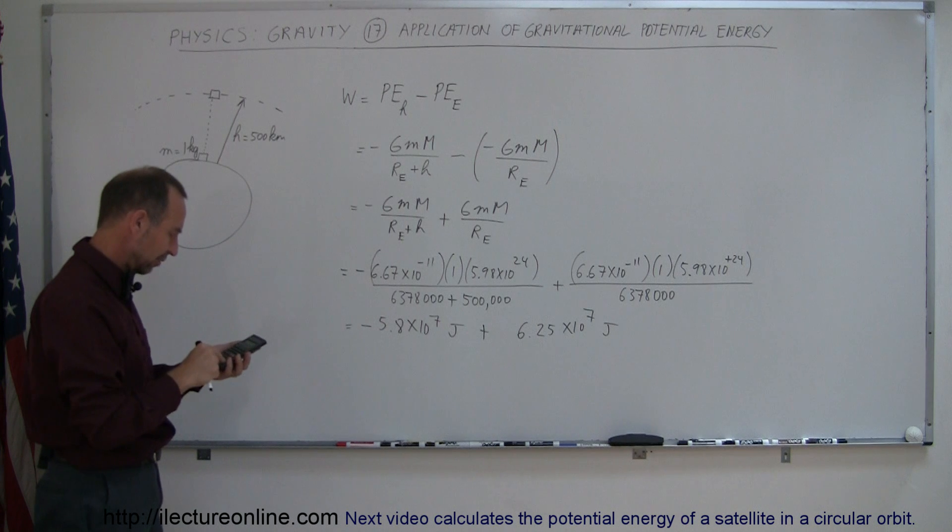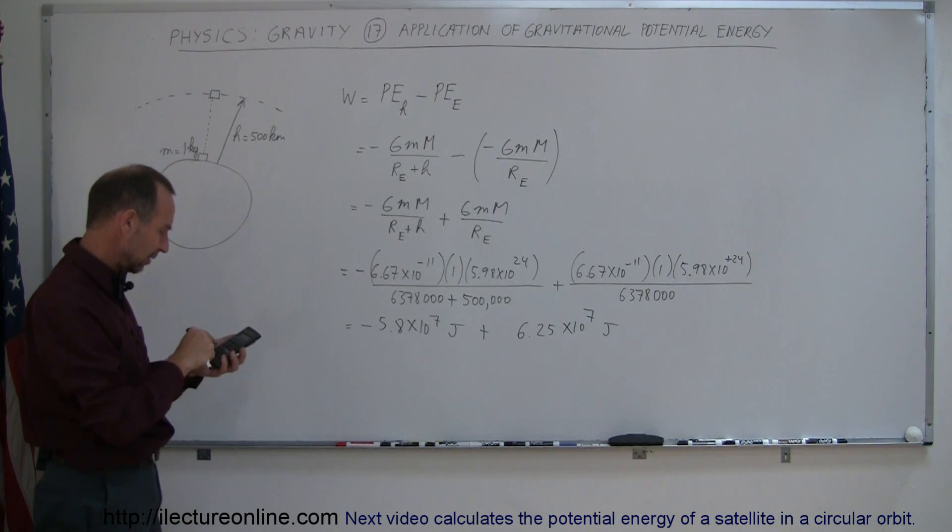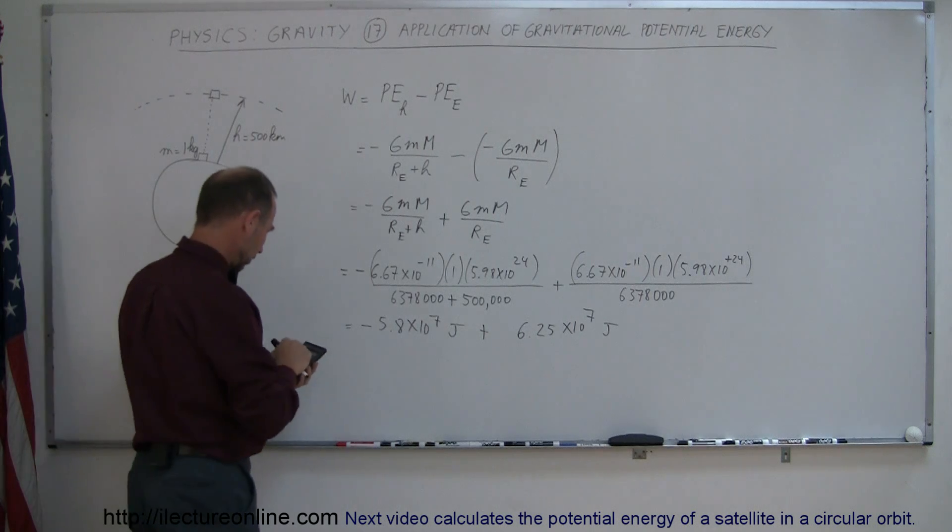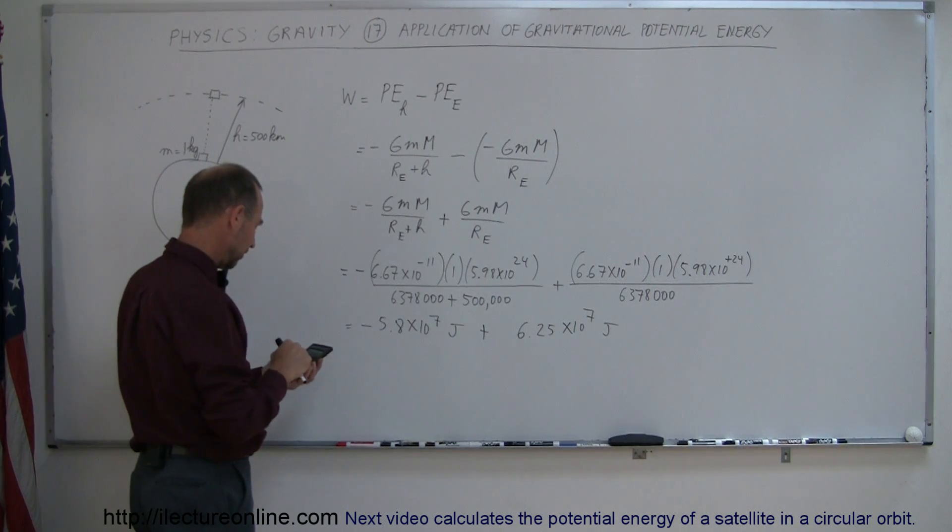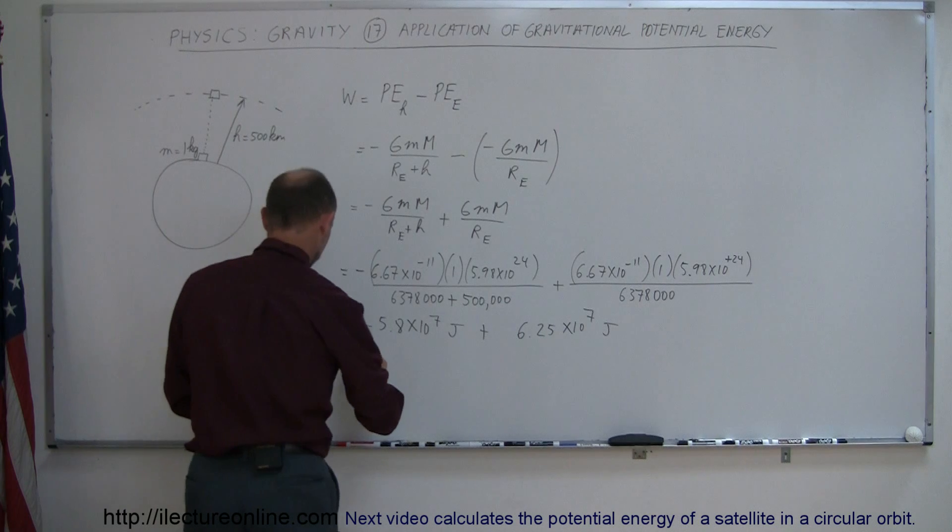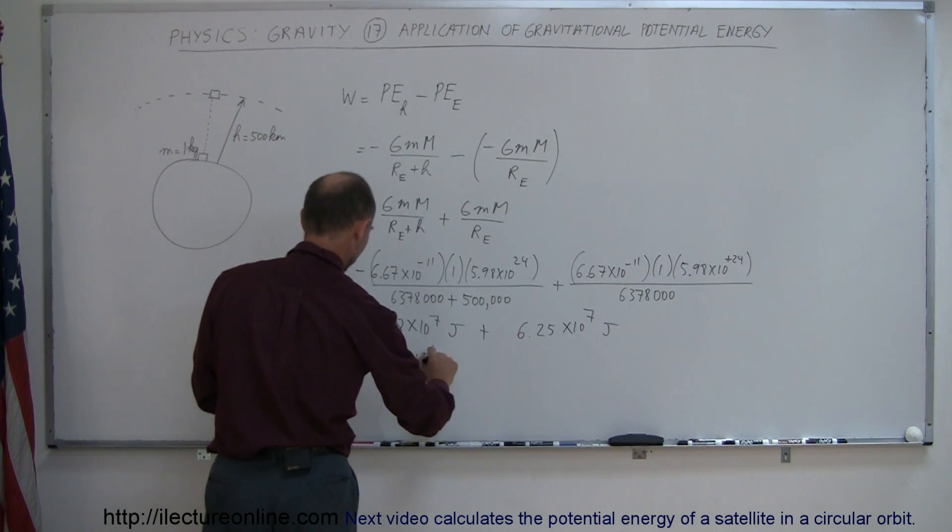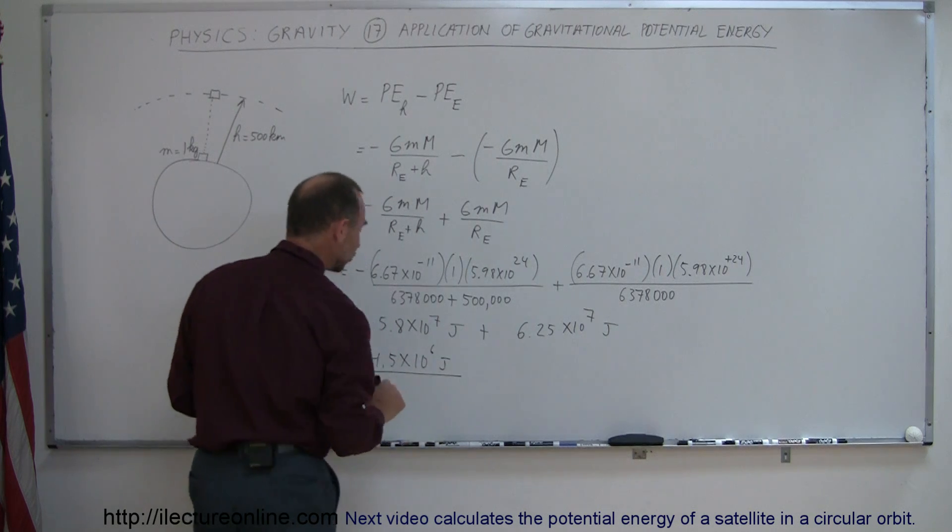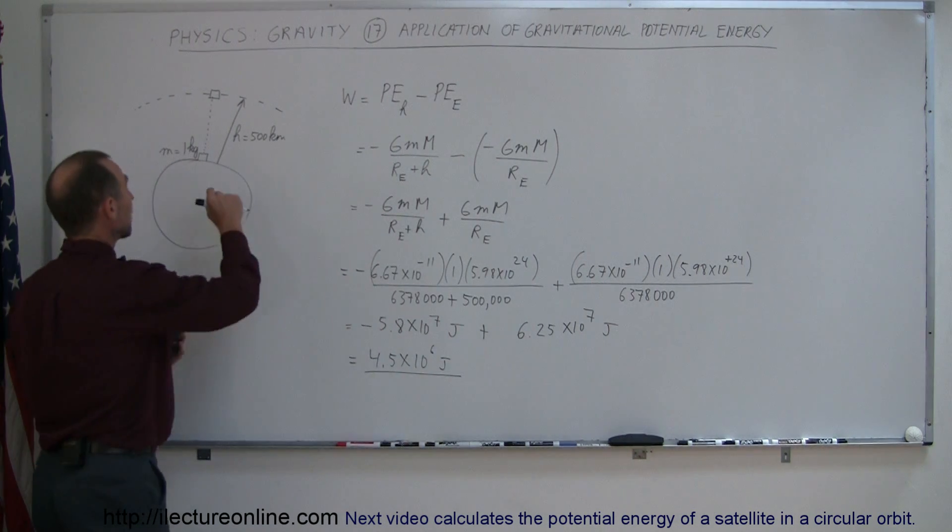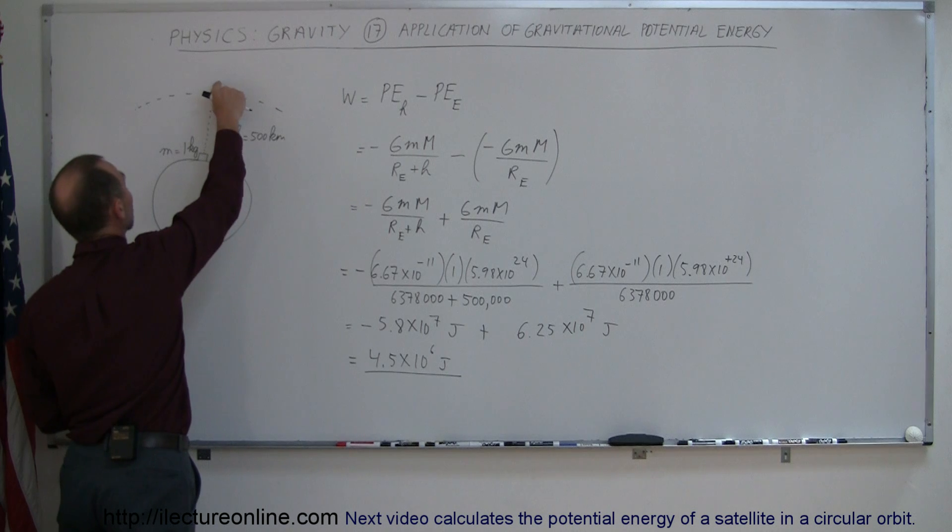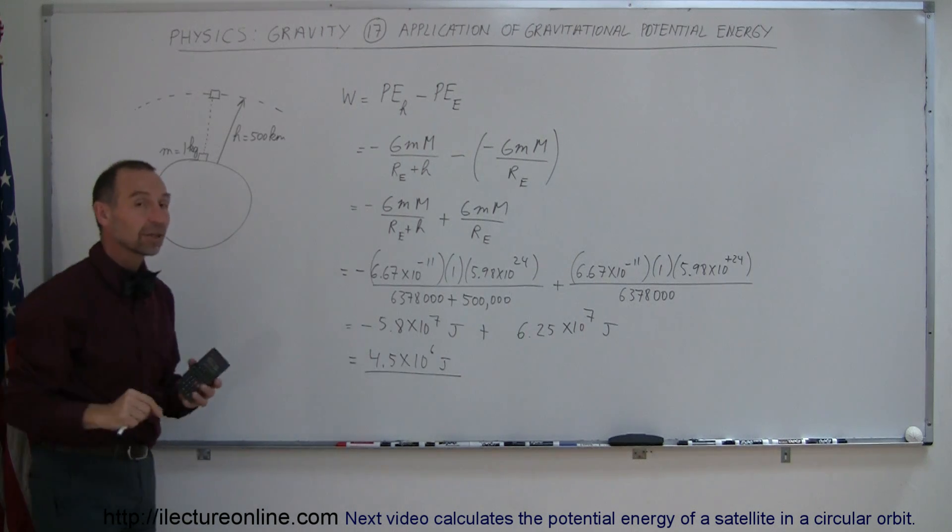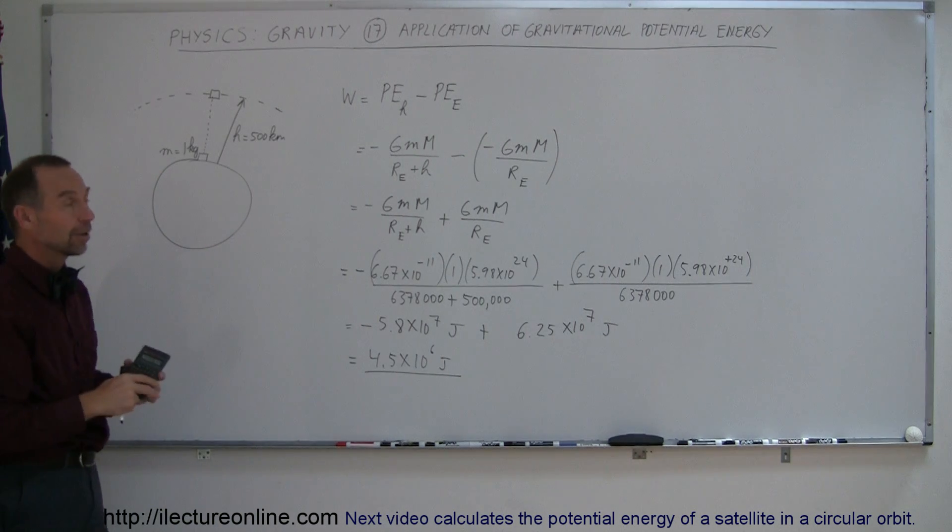So take that number and subtract from that, so minus 5.8e7 equals, and so that gives us a difference of 4.5 times 10 to the 6th joules. So that would be the energy required to take a 1 kilogram object and give it the additional potential energy to raise it up 500 kilometers above the Earth, and that's how you must work with the gravitational potential energy.